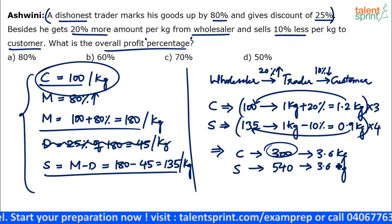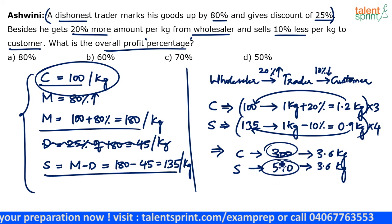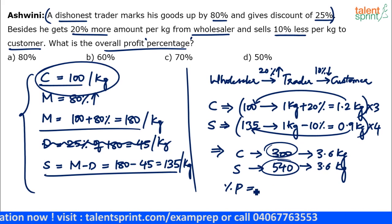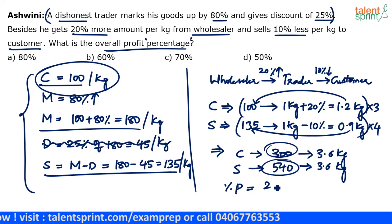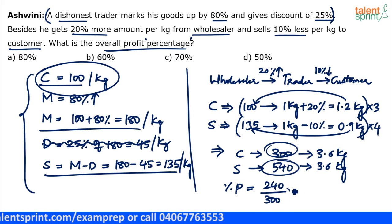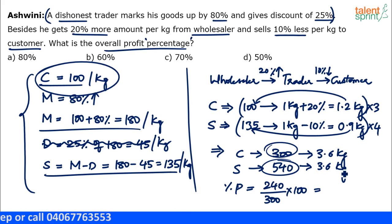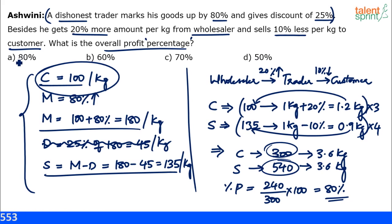For 3.6 kgs, the cost is 300 rupees and the sale value is 540 rupees. Profit is 540 minus 300 = 240 rupees on a cost of 300, which gives 80 percent. So 80 percent is the overall profit percentage.